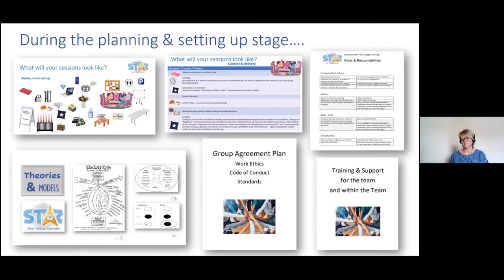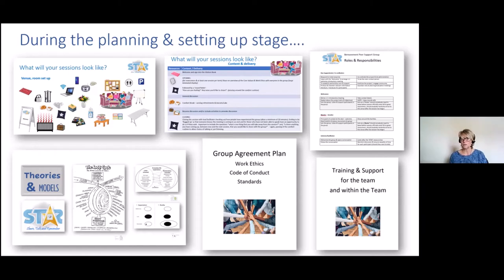We also did lots of work on a group agreement plan. Some people call it a constitution — we call it our terms of reference. It's a code of conduct and our standards which we all agree on and put together. We spoke about so many things, looking at contingency plans. Most importantly, there's no hierarchy in our group — we all equally value what we can all bring. But we had to agree on what standards we needed to put in place, because how can you evaluate what you're doing if you've got no set standards? That was work in progress for a long time and we still go back now and again and tweak our terms of reference.